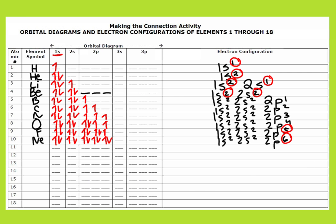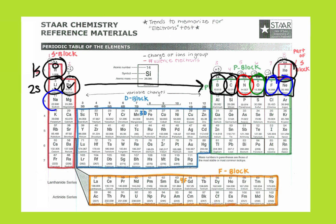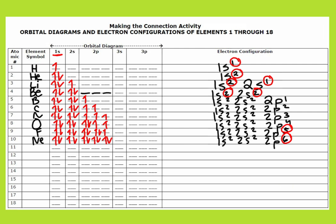Let's look at another one. Our next one is sodium. Now we're in 3s with one electron in there, so we're just going to continue filling. You can start to see some of the patterns here. Sodium is 1s2, 2s2, 2p6, and then I go down to 3s and there's one electron. I hope you're starting to see this pattern of what these orbital diagrams look like. Hopefully you have a head start on the making the connection activity. I will see you tomorrow in class when you practice and I can answer your questions. Have a great night. Bye.